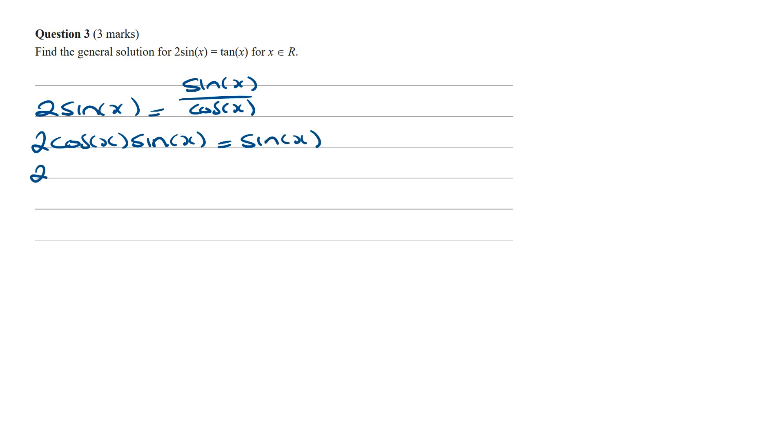Rearranging this, this is the same as 2 times cos x times sine x minus sine x is equal to 0. From here we can take out sine x as a common factor and so this is going to be sine x times 2 times cos x minus 1 is equal to 0.